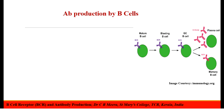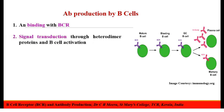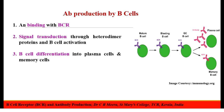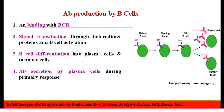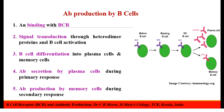Now, coming to the process of antibody production by B-cells. The antibody production takes place in five different steps. The first step is the binding of antigen with the B-cell receptor on the B-lymphocytes, followed by signal transduction through the heterodimer proteins and the activation of B-cells. The activated B-cells will differentiate into the plasma cells and the memory cells. Plasma cells carry out antibody secretion during the primary response, while memory cells carry out antibody production during the secondary response to reinfection by the same antigen.